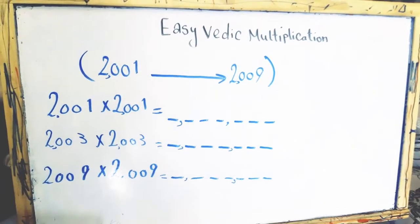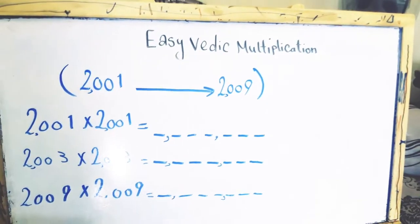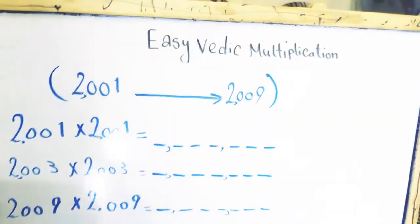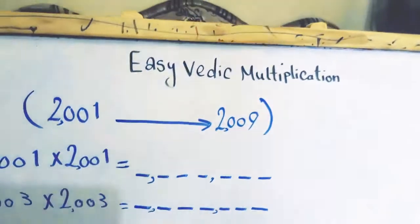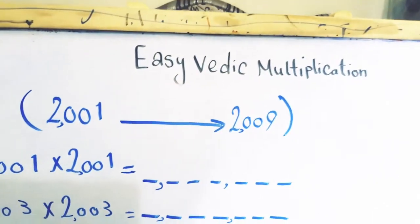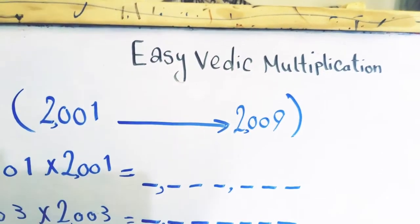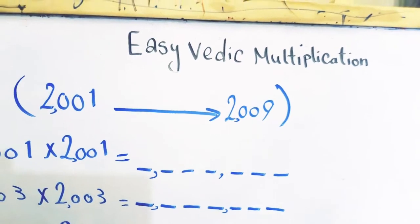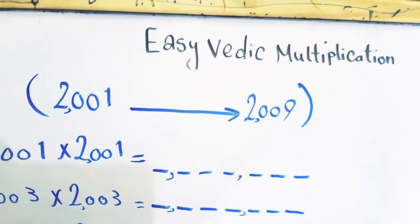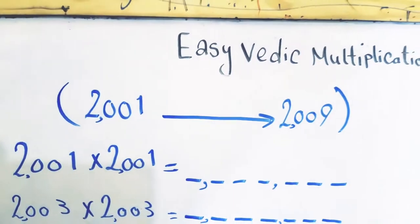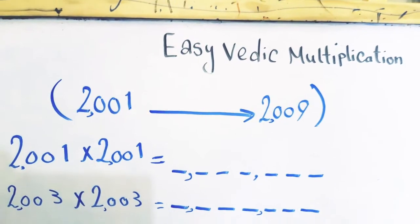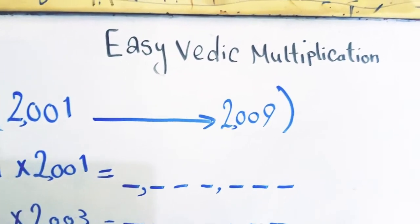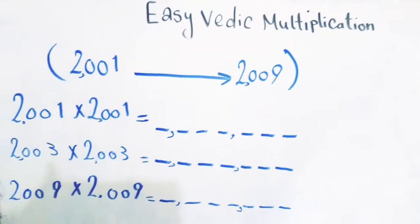Hello, viewers, welcome to EZMAS channel. Today I am presenting an EZVDIC multiplication method for the numbers from 2001 up to 2009.